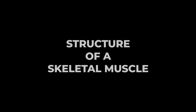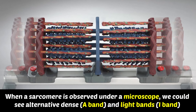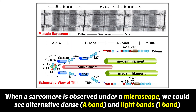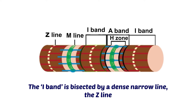What is the structure of a skeletal muscle? When a sarcomere is observed under a microscope, we could see alternating dense A band and light I bands. The central region of the A band is often less dense and is known as the H zone. The I band is bisected by a dense narrow line, i.e., the Z line.